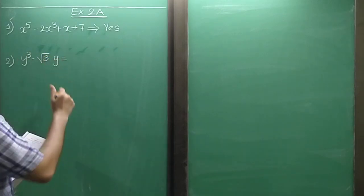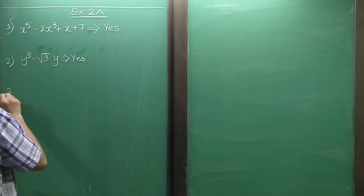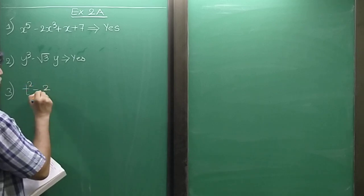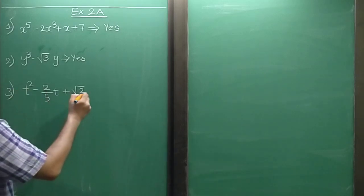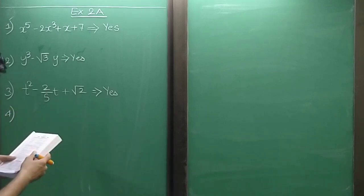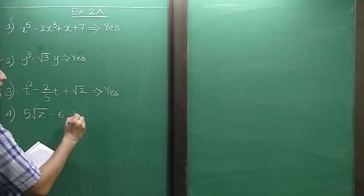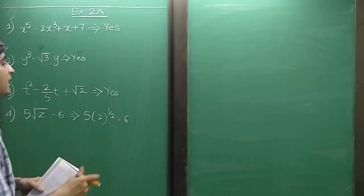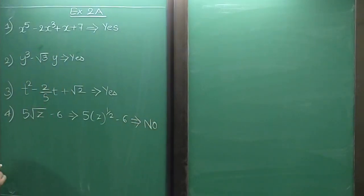Sum 3: t squared minus 2/5 t squared minus 3/5 t plus root 2. Again, the powers are whole numbers, so yes. Sum 4: 5 root z minus 6. This can be written as 5z raise to 1/2 minus 6. Since 1/2 is not a whole number, it is not a polynomial.